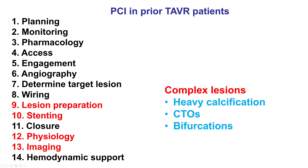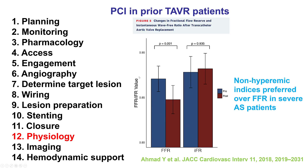Patients who have TAVR are often older and have complex coronary artery disease, often with heavy calcification. They often have chronic total occlusions and bifurcation lesions as well, which requires good lesion preparation as well as use of physiology and imaging to optimize the result.